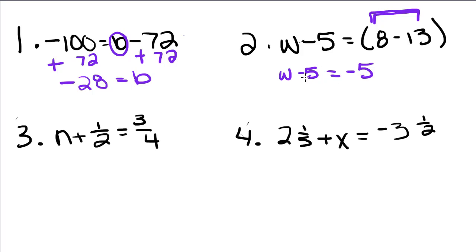So since we have subtraction on this side, in order to undo that, we're going to add 5, and add 5, and here we get w equals 0, which is okay, that is completely an acceptable answer.